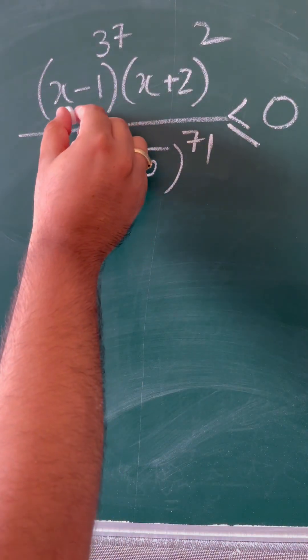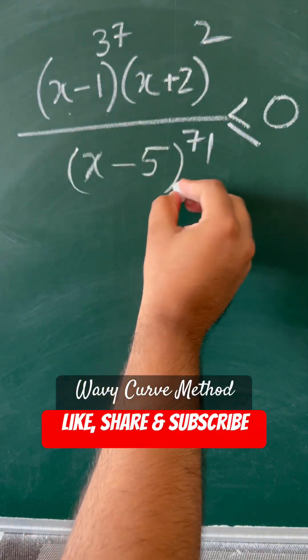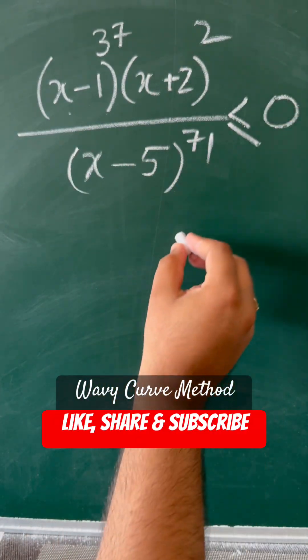Welcome to my channel. The question is: (x - 1)^37 × (x + 2)^2 divided by (x - 5)^71 less than or equal to 0.